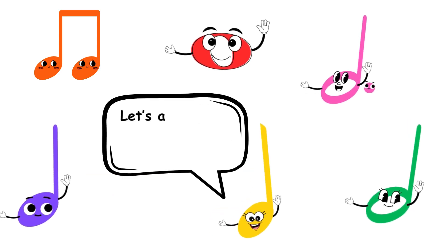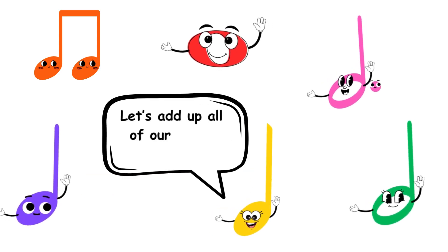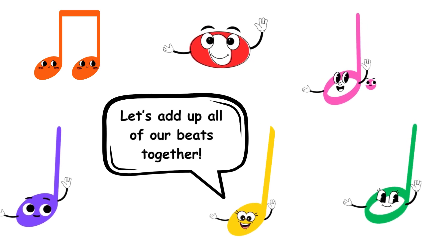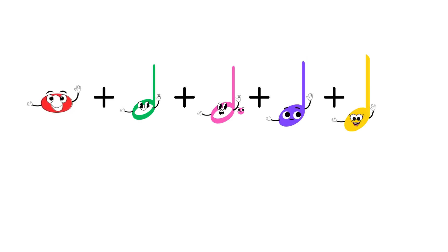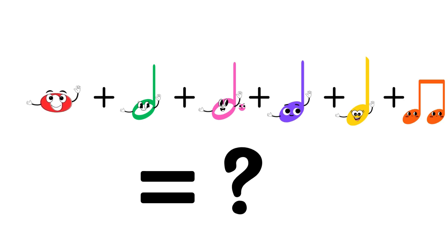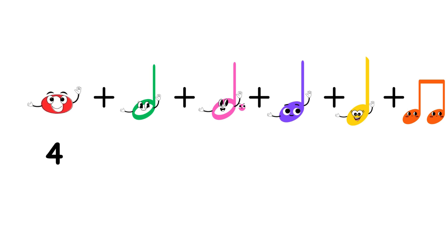Let's add up all of our beats together. Then, whole note plus minim or half note, plus dotted minim or dotted half note, plus crotchet or quarter note, plus another crotchet or quarter note, plus quaver twins equals how many all together? 4 plus 2 plus 3 plus 1 plus 1 plus 1 equals 12.